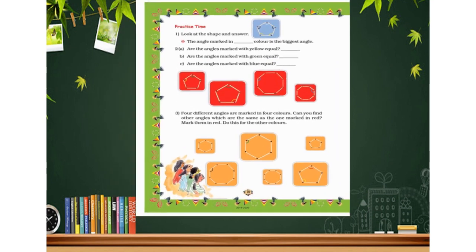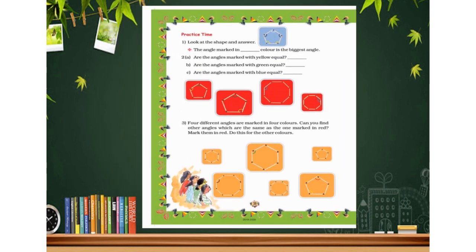Now students, here we are going to do some practice. In the figure, you can see different figures are given. From this figure, you have to answer all the questions. First, look at the shape and answer: the angle marked in which color is the biggest angle? Three colors are given — yellow, black, and white. In the blue figure, three different colored angles are given. The biggest one is the white one.